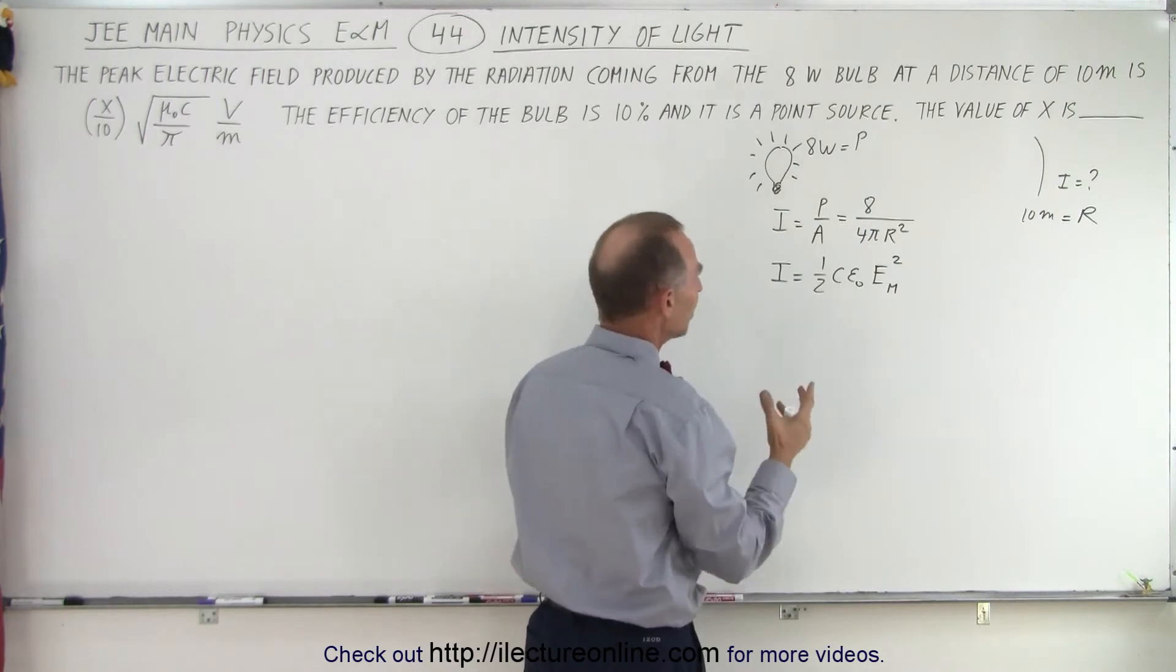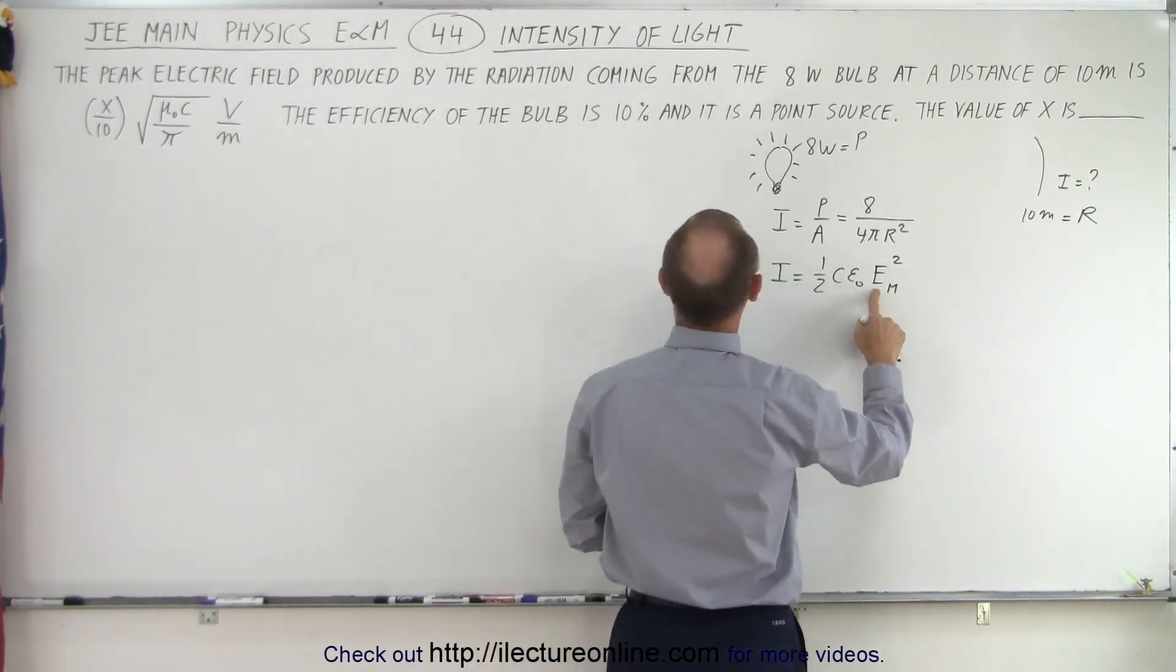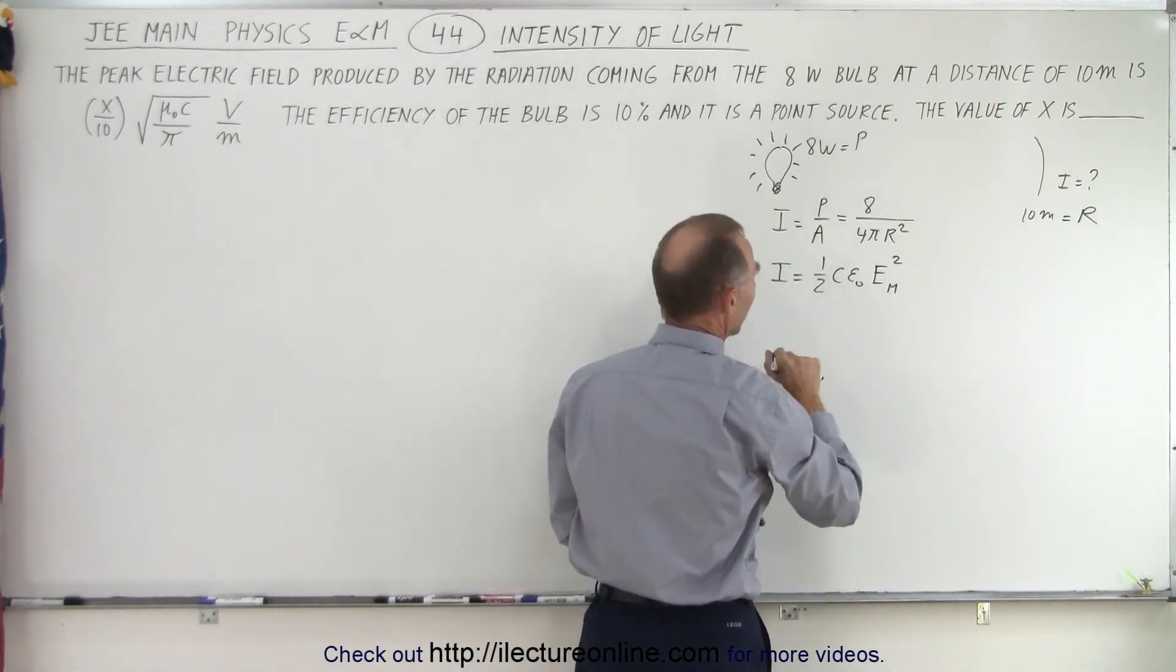Which means we now have a relationship here where we can solve this for e max because that's what they want. They want the peak electric field produced. So that's e sub m.